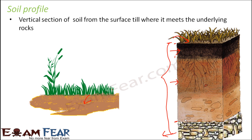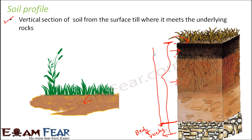These layers of soil lie above the bed of rocks. It is called a bed of rocks because the entire soil structure lies above this layer of rocks — it is kind of a bed for the soil. Soil profile can be defined as this vertical section starting from the surface until it meets the underlying rocks. This entire section is the soil profile.